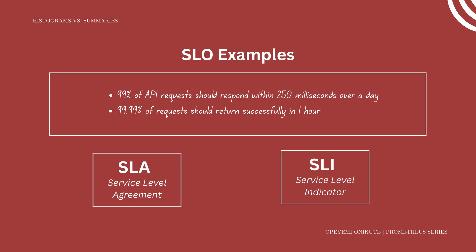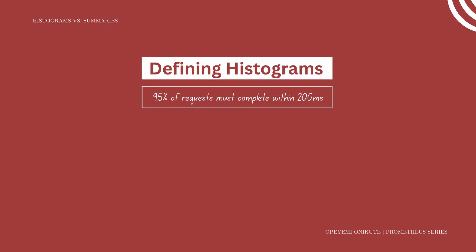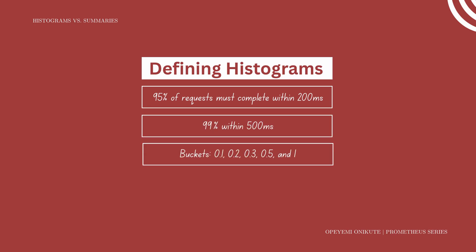Let's discuss how to define SLOs using histograms. If your SLO is 95% of requests must complete within 200 milliseconds and 99% within 500 milliseconds, you will choose buckets like 0.1, 0.2, 0.3, 0.5, and 1 — each representing a fraction of a second (0.1 is 100 milliseconds, 0.3 is 300 milliseconds, and so on). Each of these buckets should map to how your users feel about delays — for example, people generally consider 1 to 3 seconds a significant delay.